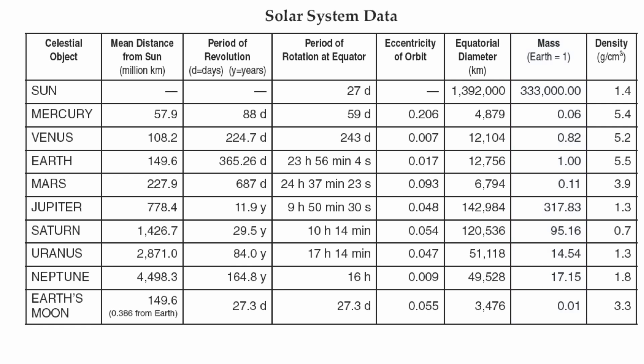Next is going to be density. And this basically shows us that the terrestrial planets are going to be a little bit more dense - Mercury, Venus, Earth, and Mars - than your Jovian planets of Jupiter, Saturn, Uranus, and Neptune. The one oddball here is going to be Saturn that has a density of 0.7, which means that Saturn would float in water.